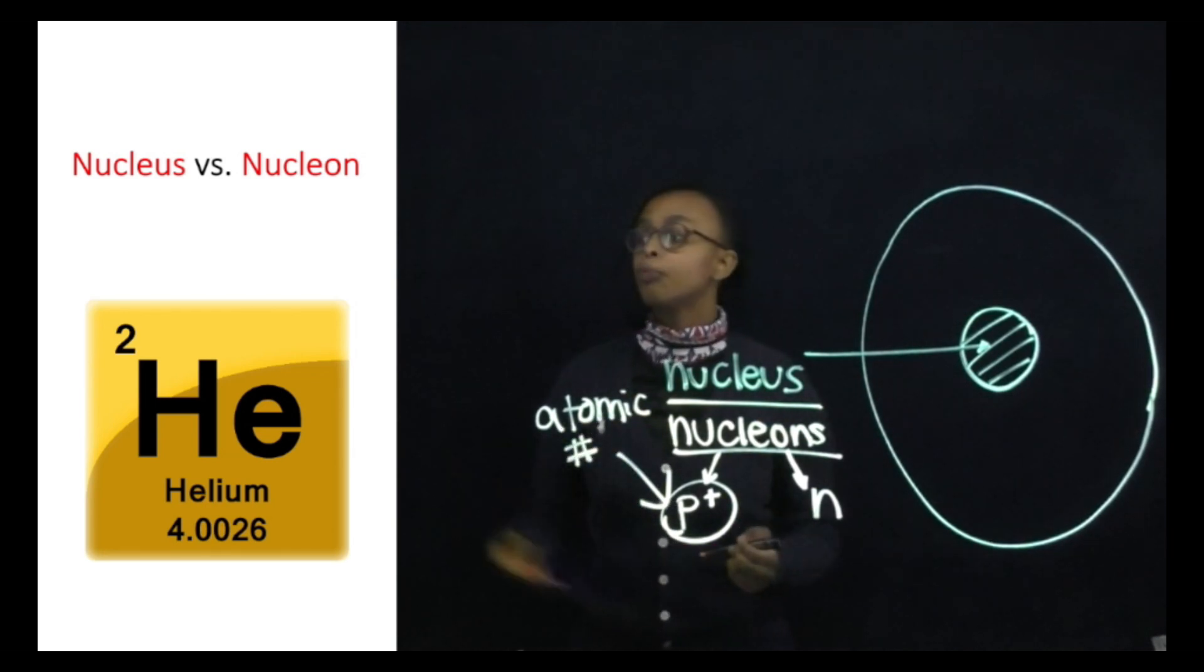And then the bottom number where we have here, this number 4.0026, is our mass of our helium, how it's most commonly found in nature.